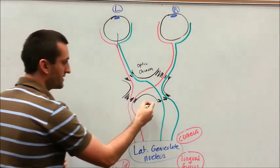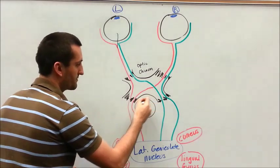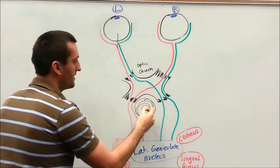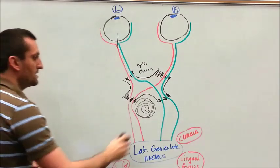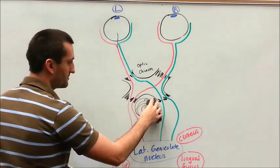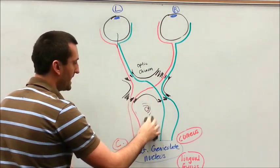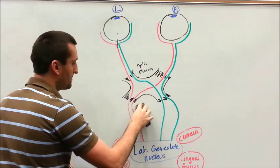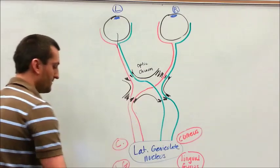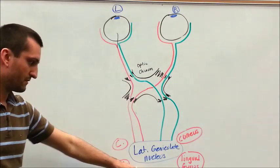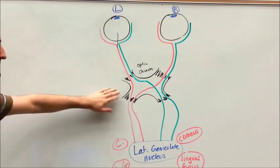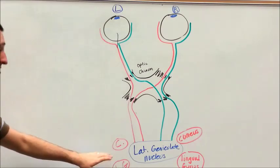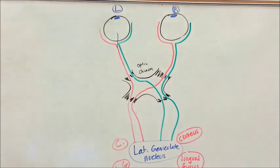Your pituitary will be right here. And then finally, you've got the lateral geniculate nucleus, and that is going to be part of the visual field processing area for your brain. So now we've got the basics: eye, optic chiasm, and then its final endpoint — and we'll get to that in depth a little bit later.